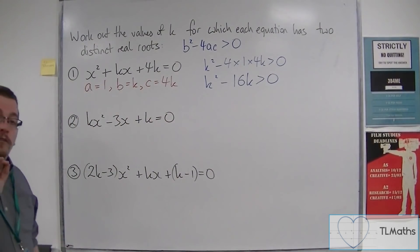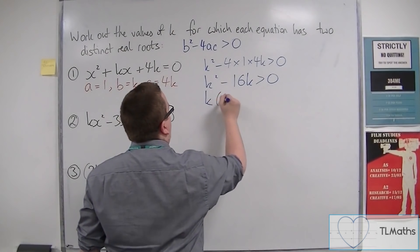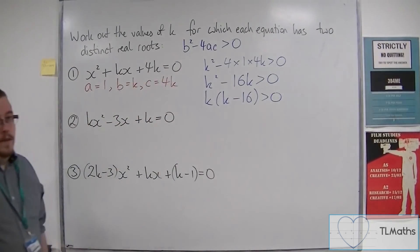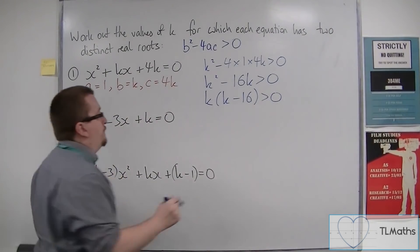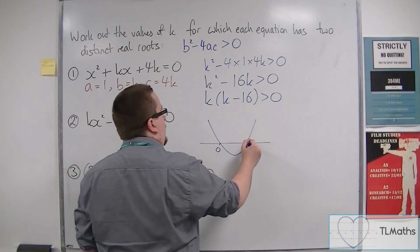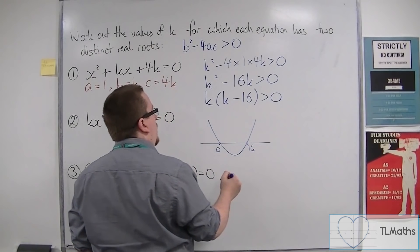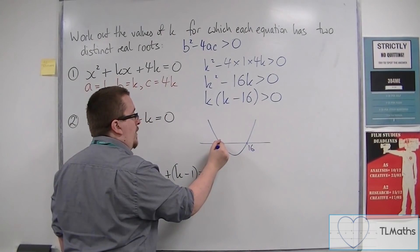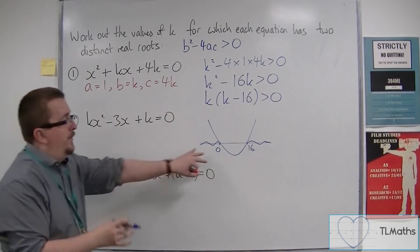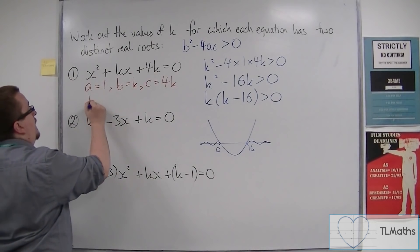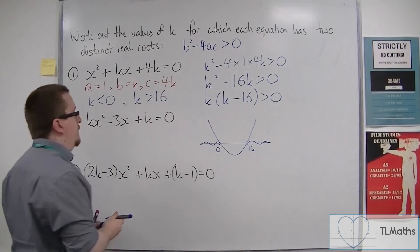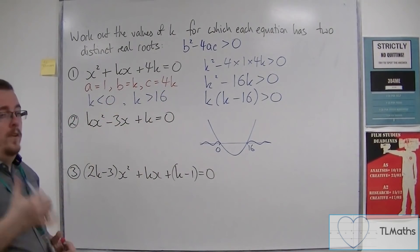Now this is a quadratic you can factorise into a single bracket. So k times k minus 16 is greater than zero. You then want to sketch that. So that would be going through zero on the k-axis and 16. So where is this above the k-axis? Well, it's above it there and there. And so the two regions are identified by k is less than zero and k is greater than 16. And that solves that first problem.